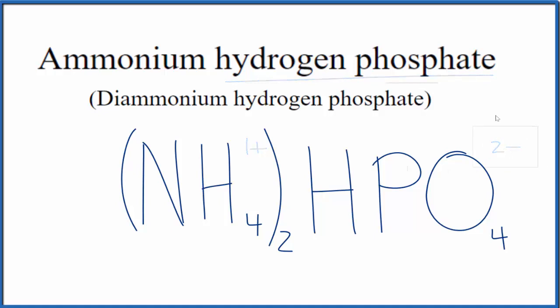So this is the formula for ammonium hydrogen phosphate, also called diammonium hydrogen phosphate, NH4, 2, HPO4. This is Dr. B, and thanks for watching.